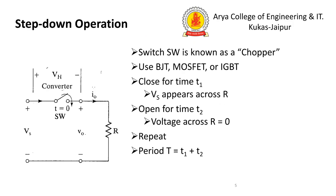Basically, we categorize choppers into two parts: step-down and step-up operation. In step-down operation, we use a switch (SW). A chopper is fundamentally a switching circuit, not a single device. The switching element — known as the chopper — uses devices like BJT, MOSFET, or IGBT.